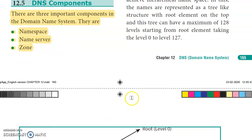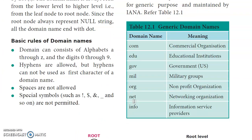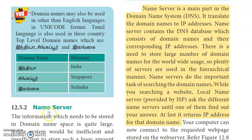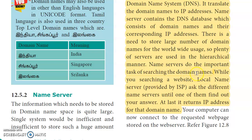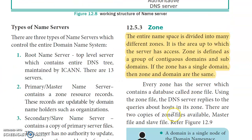Second component - Name Server: The name server maintains the domain name database. It translates domain names to IP addresses. When a domain name is searched in a browser, the name server finds the available IP address details.